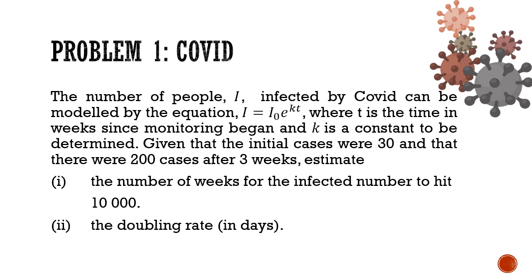Now let's move on to one real-world model which is COVID. Now in problem one, we have the number of people, i, infected by COVID that can be modeled by the equation i equals i0 times e to the power of kt, where t is the time in weeks since monitoring began and k is a constant to be determined.